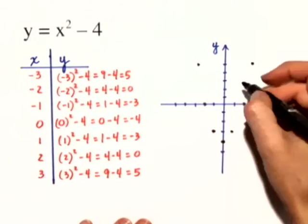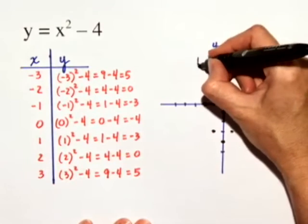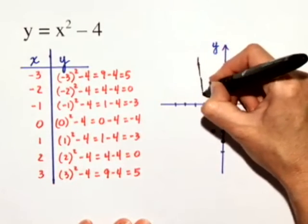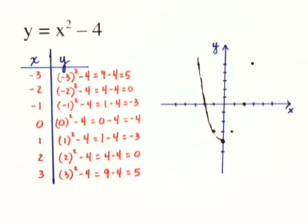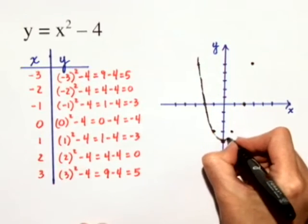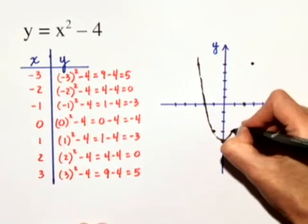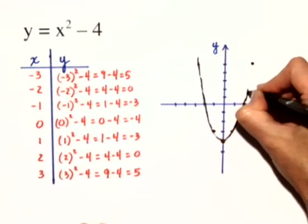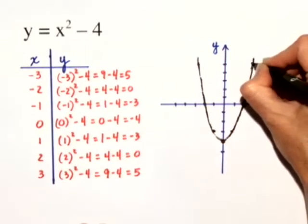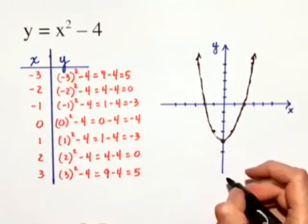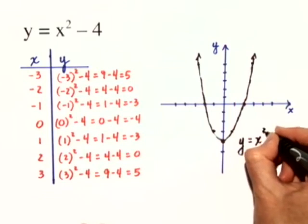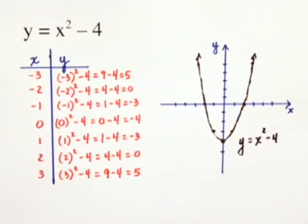And now we can join these points to make a smooth curve, which is going to be in the shape of a parabola. And this is the graph of y is equal to x squared minus 4.